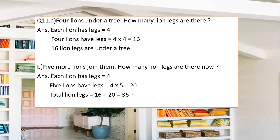Question number 11: four lions are under a tree — how many lion legs are there? If one lion has 4 legs, you simply multiply 4 × 4 = 16. So there are 16 lion legs total under the tree.